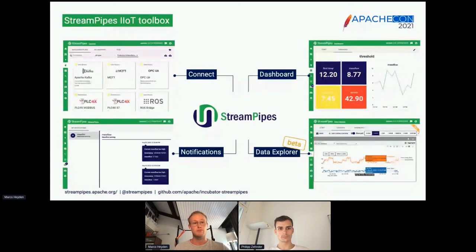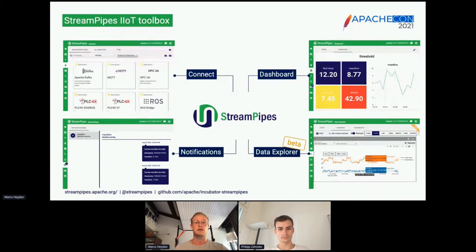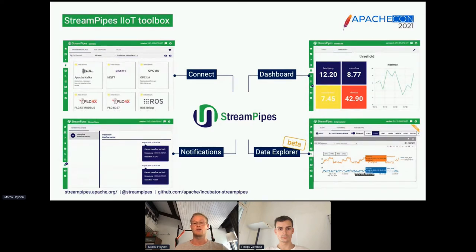StreamPipes consists of four main components. The first being StreamPipes Connect to connect data sources. Then you can build dashboards — shown in the top right — where you can build simple user interfaces to observe or track certain values of your raw data but also your analysis results. Then you can create notifications which notify you about events of interest. Finally, still in beta, we have the data explorer, which allows you to easily explore the data stream, apply labels to a large number of observations at the same time, and afterwards export the data — for example, to train your machine learning model.